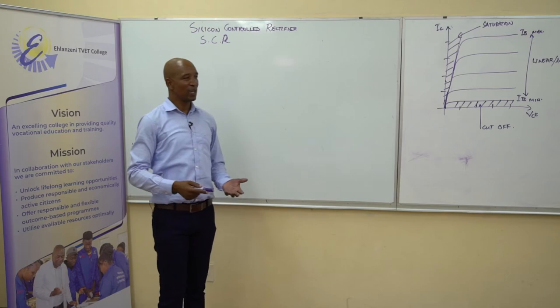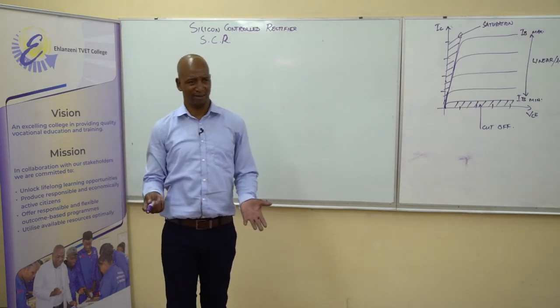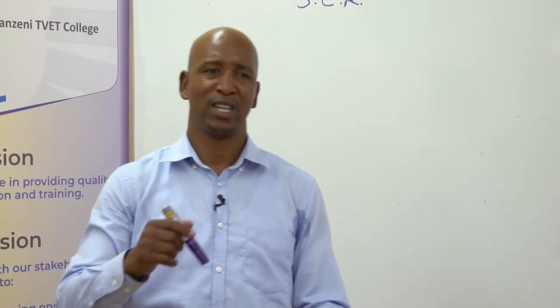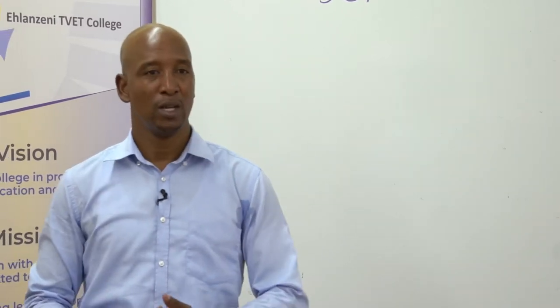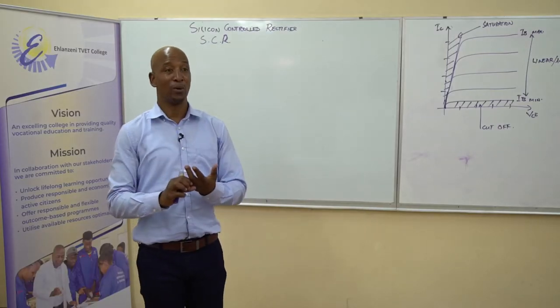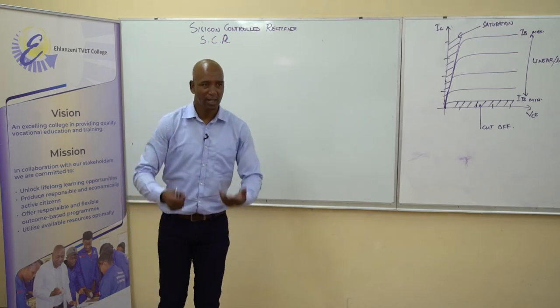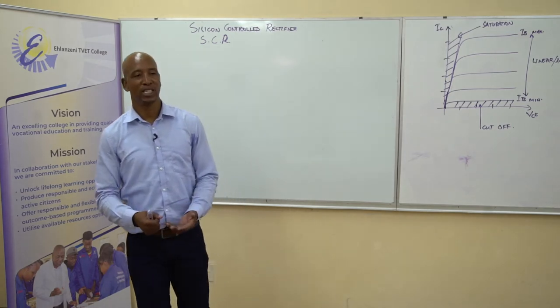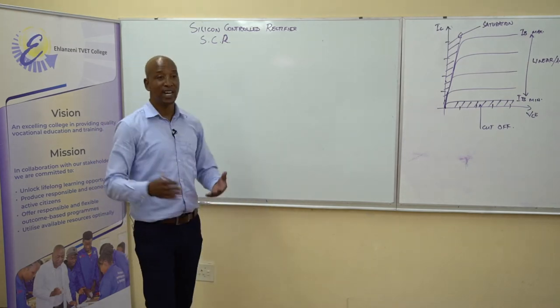Remember we have semiconductor physics — that's where it all starts. We have our doping, we have N and P, and then we join them. We form a diode, and then we join two diodes to form a transistor. We join two transistors and we form what we call a thyristor.